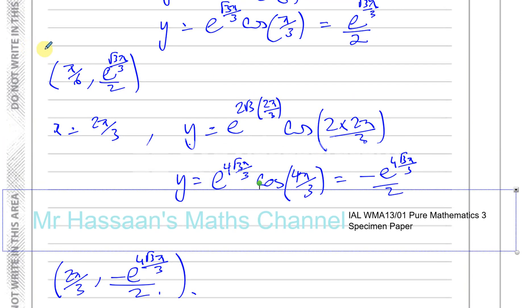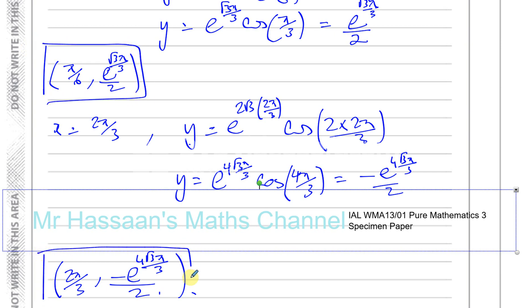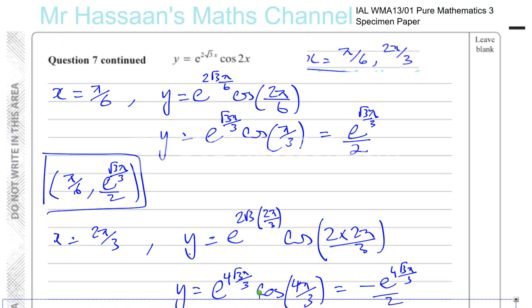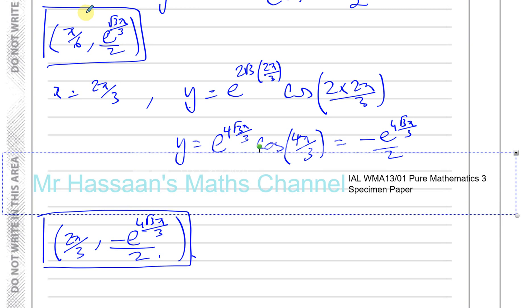So those are the two stationary points. You've got to be very careful about these fiddly little roots, pi's, and exponents, but there we have the final answers.